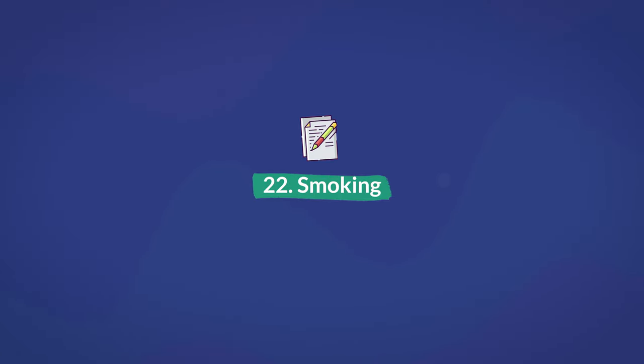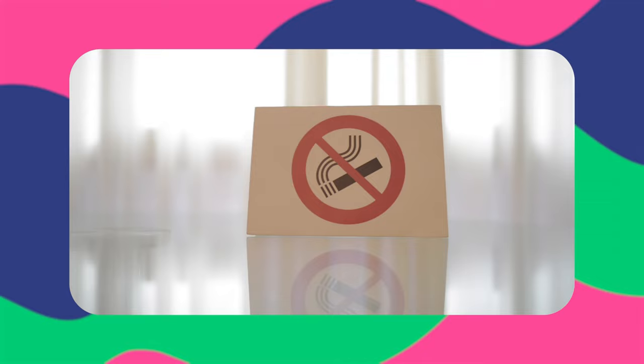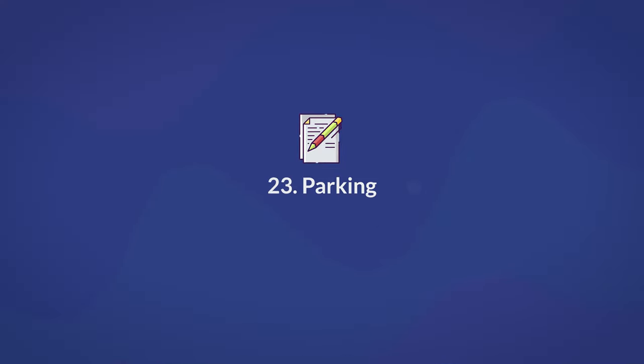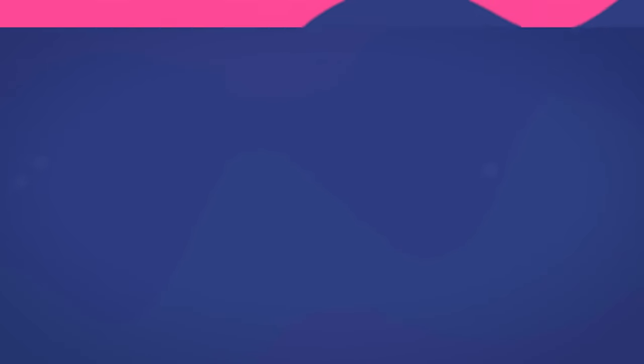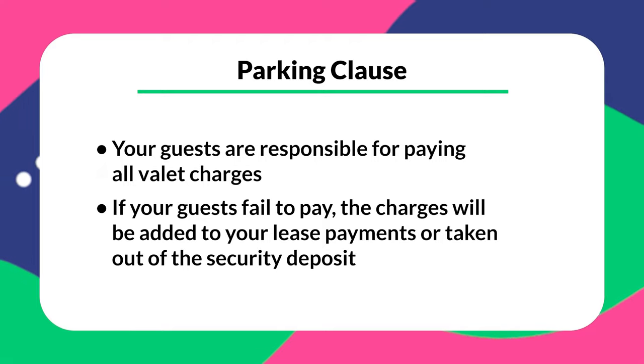Number twenty-two is smoking. A smoking clause in a lease is as important as any other legal rule in the document. You can either completely prohibit smoking on your premises or you can designate smoking areas for the tenant. If either the tenant or guests don't follow these rules, you can use this clause to charge an additional fee or sue the tenant. Number twenty-three is parking. Regardless of the parking spaces your premises have, you should assign a specific spot for your tenant. If your building offers valet, also include provisions — for example, guests are responsible for paying all valet charges. If guests fail to pay, the charges will be added to lease payments or taken out of the security deposit.